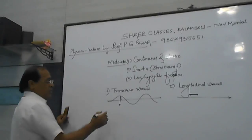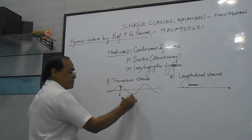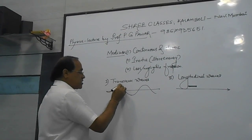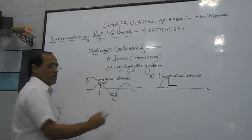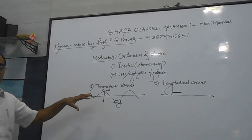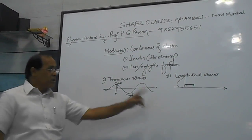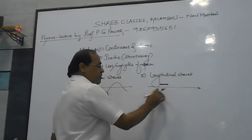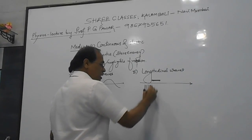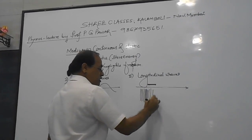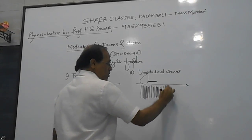In a transverse wave, the highest peak point is called a crest and the lowest point is called a trough. So the medium is divided into crests and troughs. In a longitudinal wave, as the wave travels, the medium is divided into rarefaction and compression, alternating — rarefaction and compression.